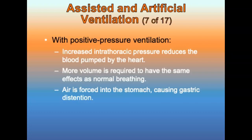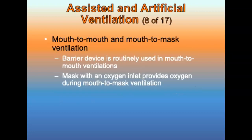Ventilation rates: for an adult, ventilate one breath every 5 to 6 seconds. For a child and infant, ventilate one breath every 3 to 5 seconds. A barrier device is routinely used in mouth-to-mouth ventilations — a plastic barrier placed on the patient's face with a one-way valve to prevent backflow of secretions, vomit, and gases. Mouth-to-mouth ventilations without a barrier device should be provided only in extreme situations. A mask with an oxygen inlet provides oxygen during mouth-to-mask ventilations, supplementing the air from your lungs. The gas you exhale contains about 16% oxygen; with the mouth-to-mask system, patients benefit from significant oxygen enrichment.